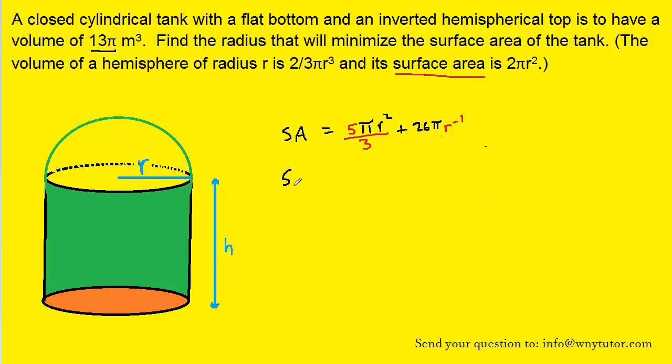The derivative of the surface area can just be expressed as surface area prime. We'll use a power rule here by pulling down the 2, multiplying to give us 10π/3, and then it becomes r to the positive 1. And then we can use the power rule again to pull down that minus 1, so we get minus 26π and then subtract 1 from the exponent to give us r to the negative 2.